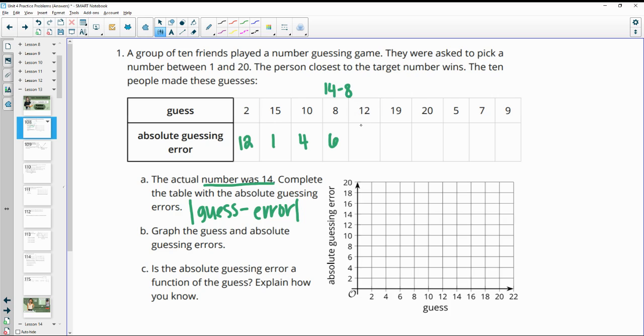12 is 2 away. 19 is 5 away from 14. 20 is 6 away. 5 is 9 away. 7 is 7 away, and 9 is 5 away.